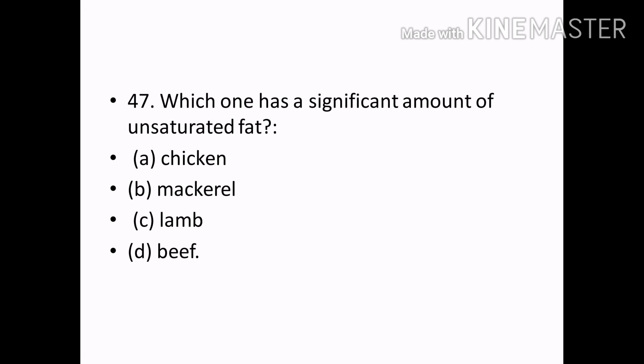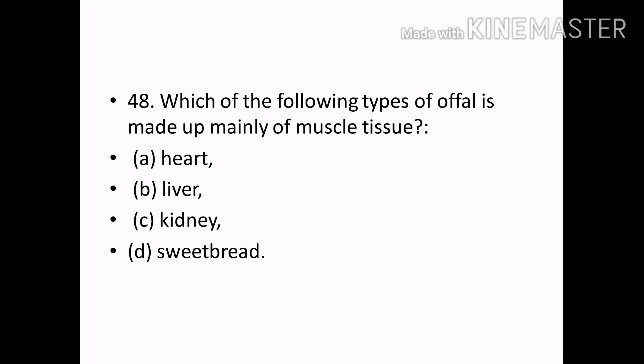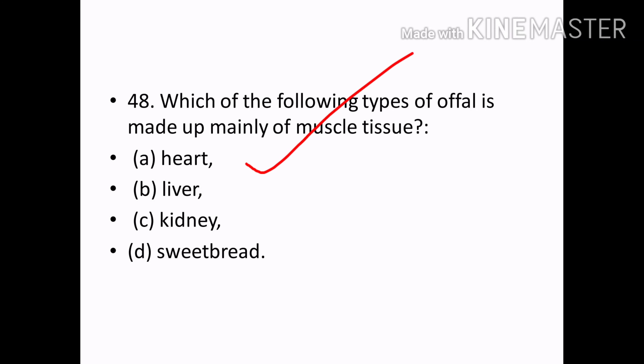Which one has a significant amount of unsaturated fat? Options — Chicken, Mackerel, Lamb, Beef. Correct answer: Mackerel, because fish contains unsaturated fat. Meat is made up mainly of: Options — Hard muscle tissue, Liver, Kidney, Seed bread. Correct answer: Option A — Hard (muscle tissue).